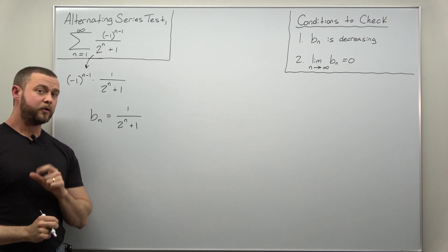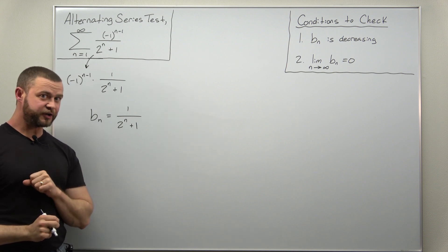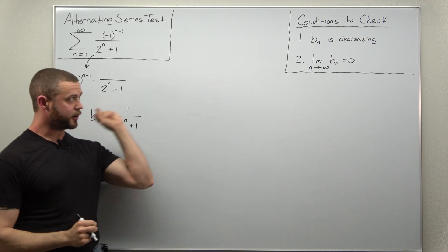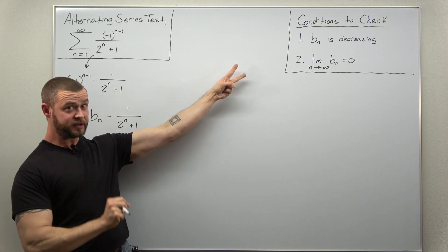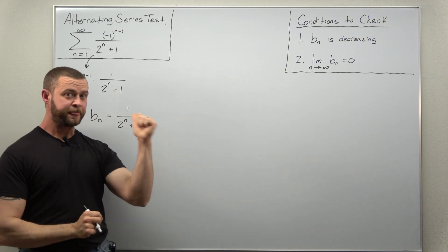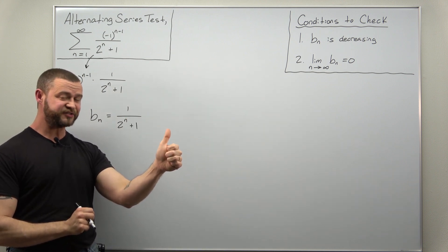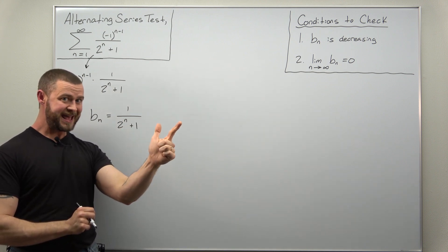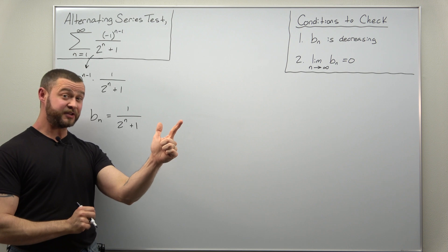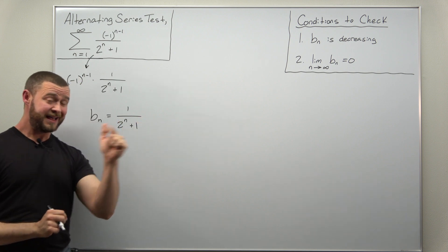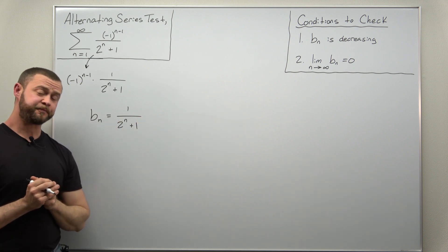Now, for the alternating series test, there are two conditions to check: that B sub n is decreasing, and that B sub n approaches zero as n approaches infinity.